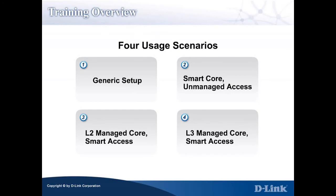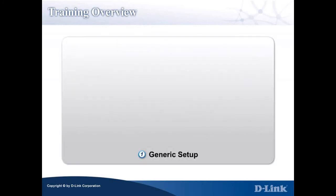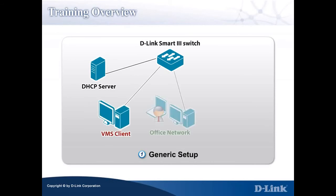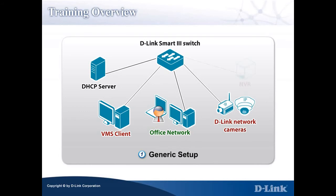Usage Scenario 1 is a single-layer network with IP surveillance solution as a generic setup. It's a right fit for small size offices or branch offices with minimal surveillance requirements.